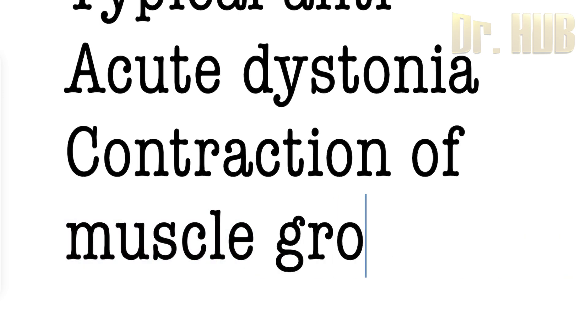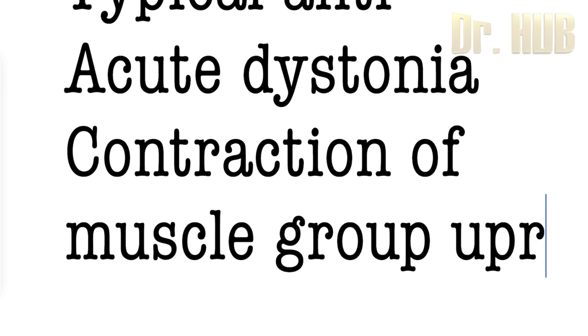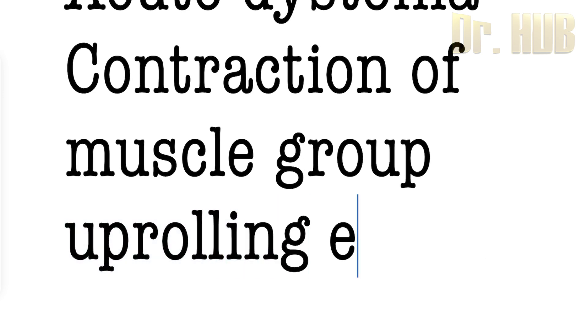So what are the side effects? First is acute dystonia. Acute dystonia means that there is a sudden contraction of a muscle group. This can include torticollis, trismus, oculogyric crisis, and uprolling of the eye can be seen.